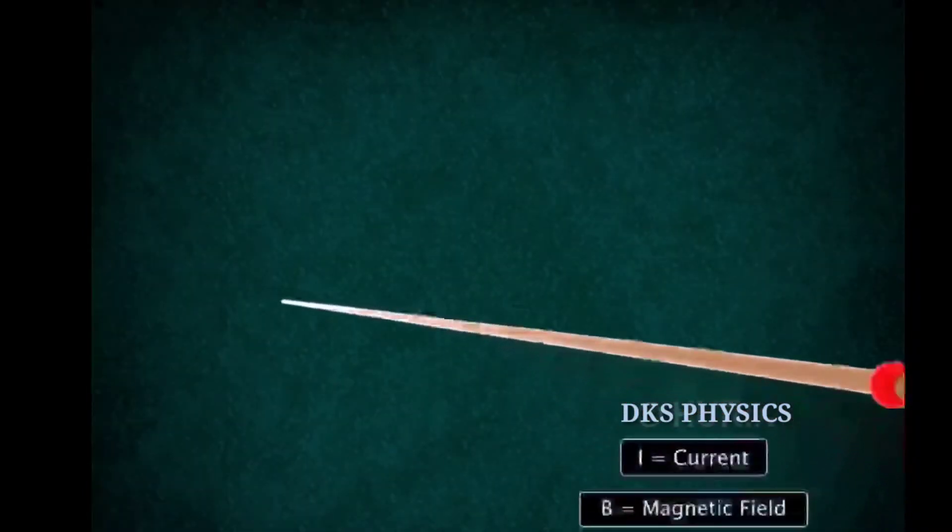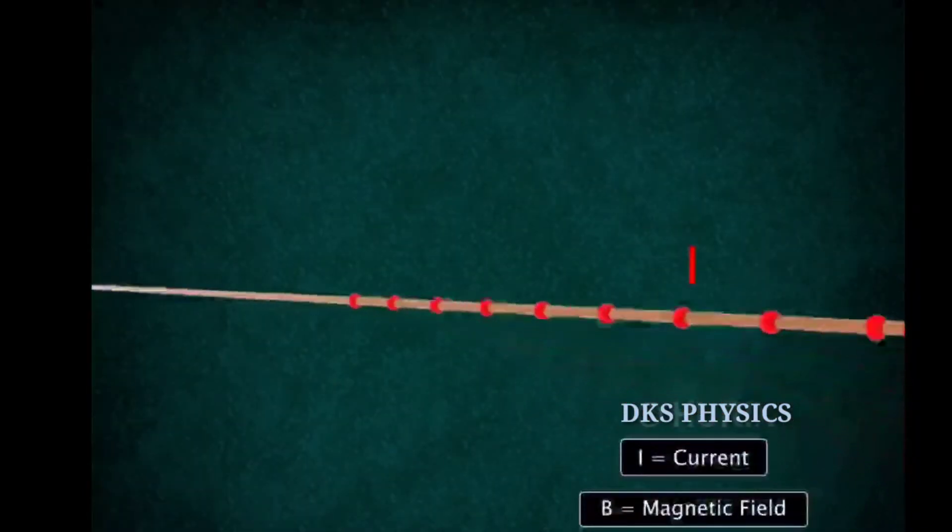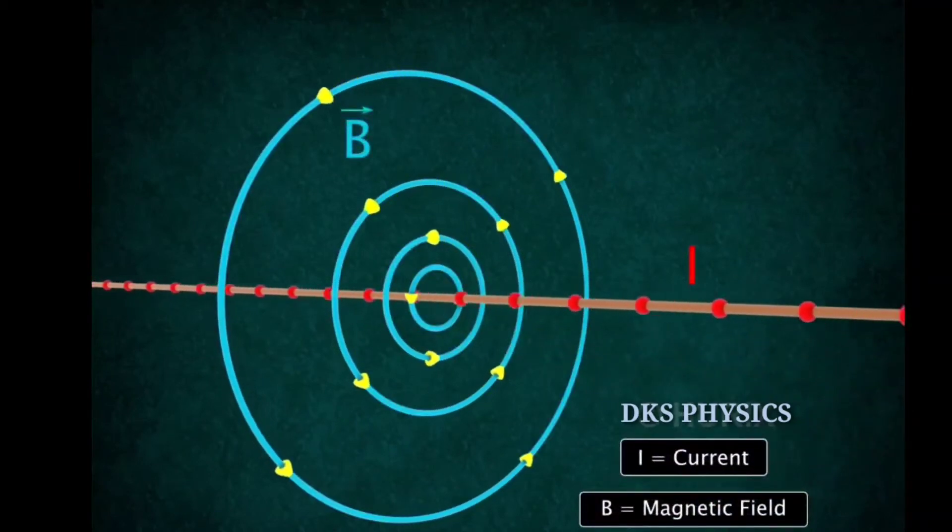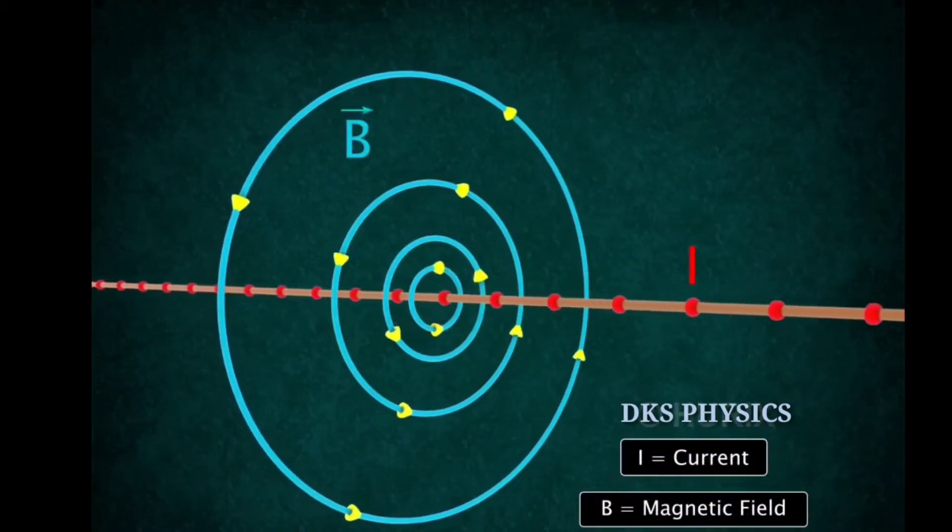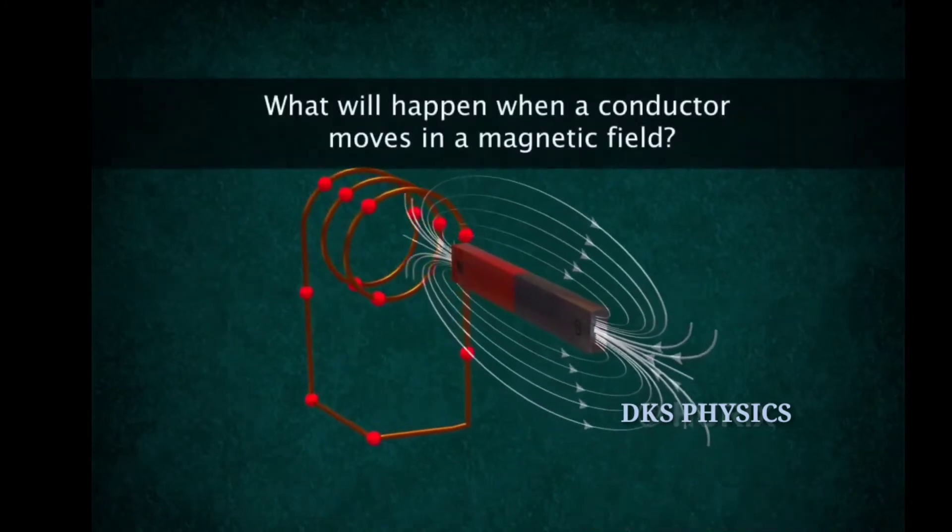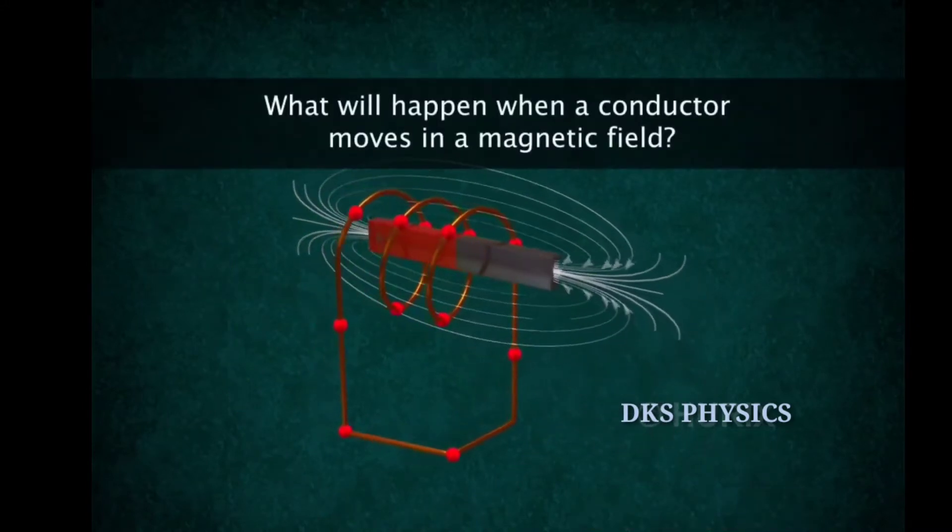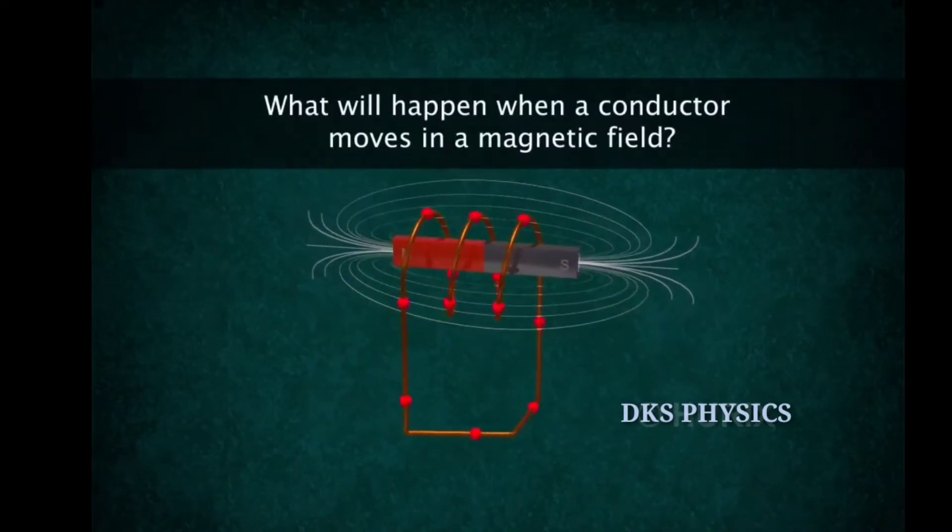Ersted's discovery showed that we can produce a magnetic field via an electric current. What will happen when a bar magnet is moved inside a copper coil with several turns?